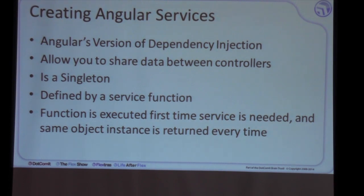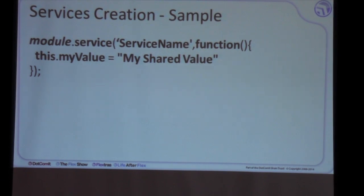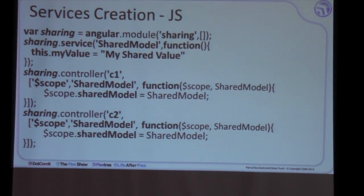A service allows you to share data across controllers. A service is actually a singleton object. It's defined similarly to modules and controllers — you provide the name and then a function or array of options. The first time you reference that service, the function is executed and the object is saved. Every time you reference that service in the future, you're actually referencing the same exact object. We could use the array notation for dependency injection if we needed to pass other services, such as the $http service, into this function.